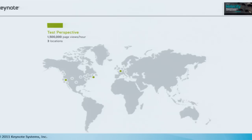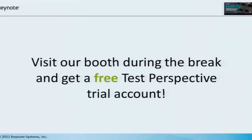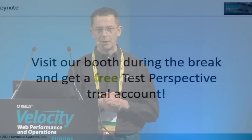So that's how quickly you can configure a load test with Test Perspective from Keynote. It is literally go through those steps and press the start button, and away it'll go injecting load. Test Perspective is good for up to about one and a half million page views per hour. If you need something beefier, we've got a product called Lowepro, which will do 150 million page views per hour from a lot more injection locations. If you've got any questions, you can come speak to me or my team here at Velocity for the next two days, and you can also sign up for a free trial account for Test Perspective. And that's me done. Thank you.